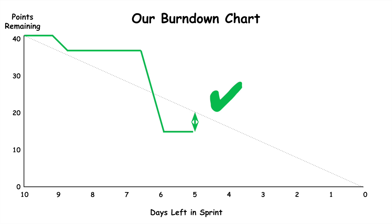Here's another example. As before, the team signed up to complete 40 points in a two-week sprint. At the end of the first week, the team has completed 25 points. This would suggest that the team is on track to meet their sprint goal.